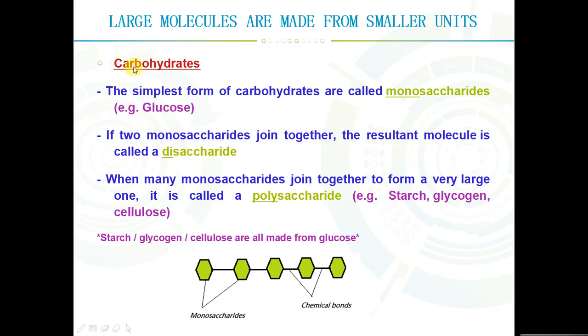The syllabus wants you to understand that large molecules are made from smaller units. Looking at carbohydrates, the simplest, smallest form are called monosaccharides, mono meaning one. Glucose is a prime example. If two monosaccharides join together by a chemical bond, the resultant molecule is called a disaccharide, di meaning two. When many monosaccharides join together to form a really large combined molecule, that molecule is called a polysaccharide, poly just meaning a lot. Examples include starch, glycogen, or cellulose.